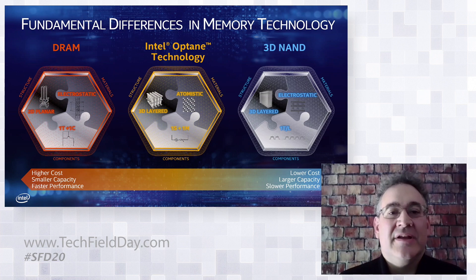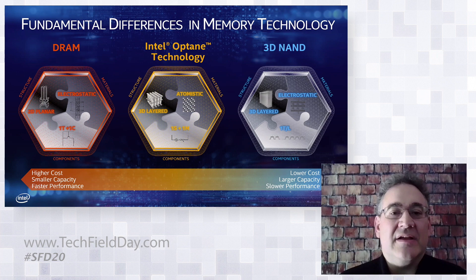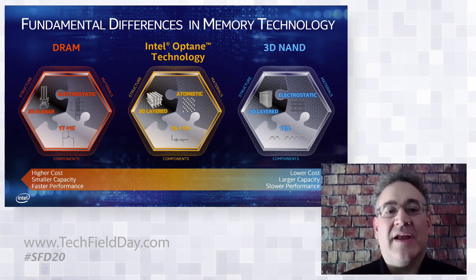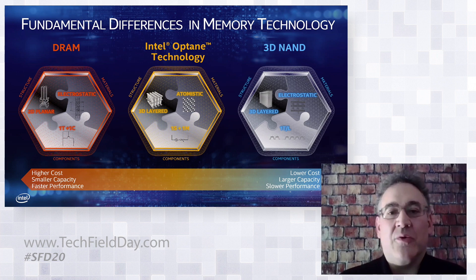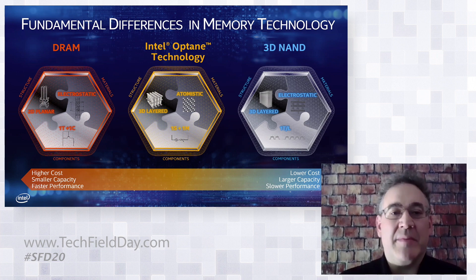Now let's look at Intel Optane technology and understand how it differs. First, the materials: it's atomistic. When you apply a charge to the memory cell, it changes the atomic bonding properties of the material — that's how it retains data. The components are one selector per one memory cell. The structure is also 3D layered — today it's two decks, with the opportunity to increase more in the future. Changing any of these characteristics changes the performance and capability of the memory.